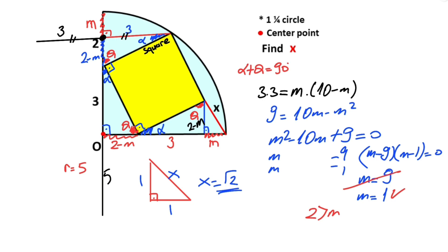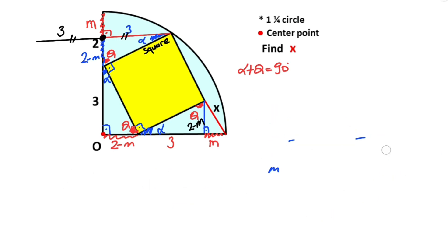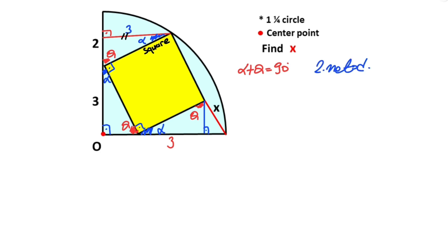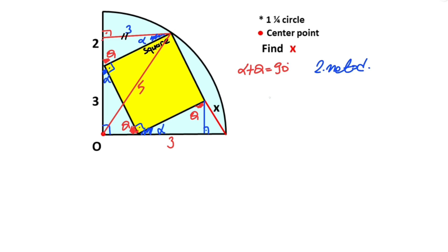That was the first method. Now we will calculate x using the second method, which is more practical. First, if we connect these two corners, the radius of the quarter circle equals five, so this red line must equal five units. There are three units here, so if we focus on this triangle, it is a 3-4-5 right triangle. Therefore this side must equal one unit, leaving one unit here.